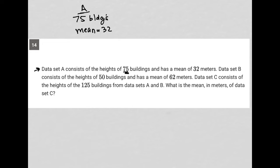That means that some value x, representing the sum of all 75 divided by 75, is equal to 32. Which technically means I could multiply both sides by 75. I don't know if this is important or not, but I can multiply both sides by 75 to figure out the actual sum of the data. So this would be x equals 2400. So the heights of all 75 buildings added up together is 2400 meters.